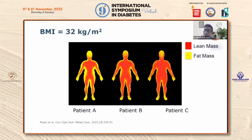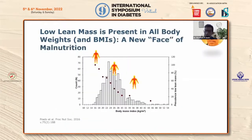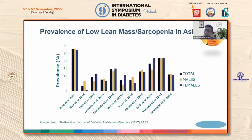For the same BMI of 32, patient C represents the Caucasian phenotype, while patient A is a typical Asian Indian — the thin-fat Indian phenotype with more fat and similar lean mass. We are seeing a new phase of malnutrition today: low lean mass present across all body weights and BMIs. This is the new modern phase of Asian malnutrition called sarcopenia — 'sarcos' meaning muscle. Across the whole Asian geography from Japan, Korea, Taiwan, Singapore, Malaysia to India, Pakistan, Nepal, Sri Lanka, and Bangladesh, we clearly recognize low lean and muscle mass.